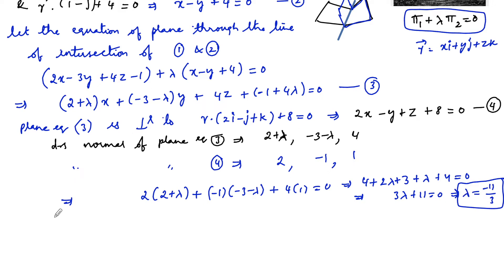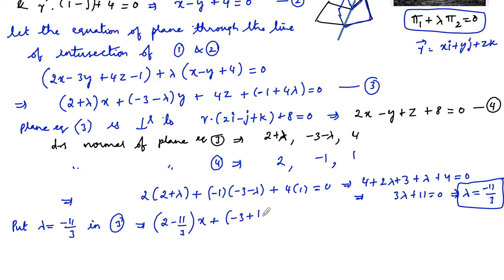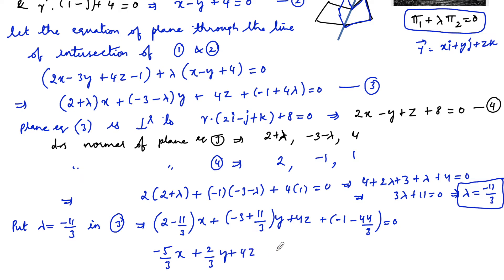Substituting λ = -11/3 in equation 3, we get: (2 - 11/3)x + (-3 + 11/3)y + 4z + (-1 - 44/3) = 0, which simplifies to (-5/3)x + (2/3)y + 4z - 47/3 = 0, or multiplying through by 3: -5x + 2y + 12z - 47 = 0.